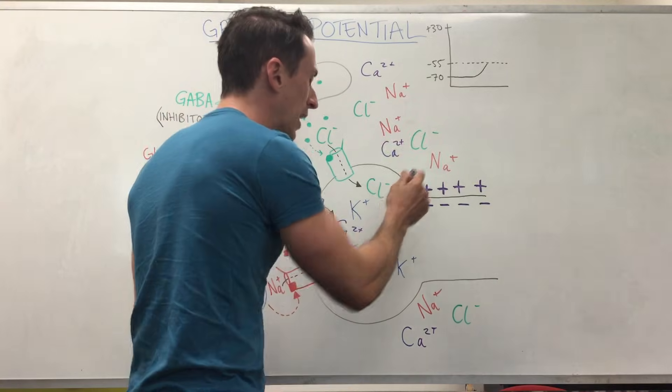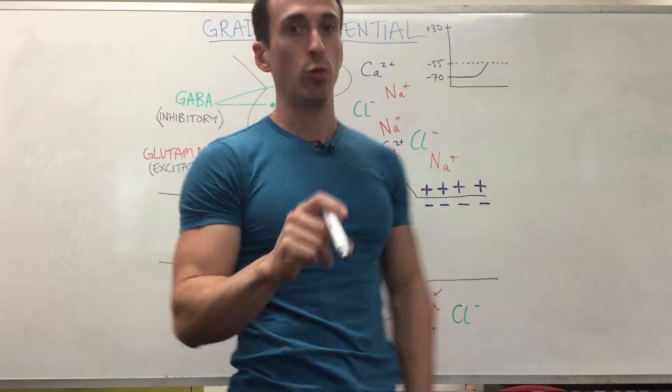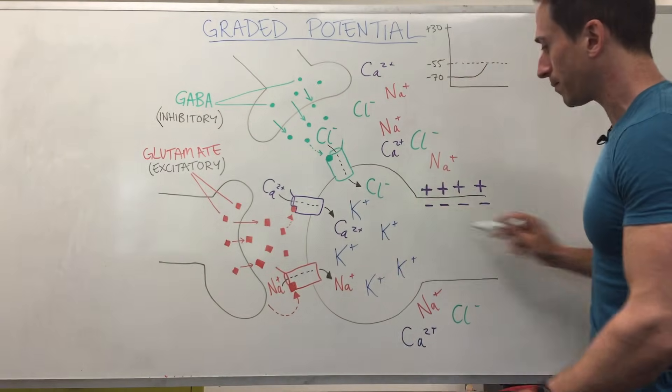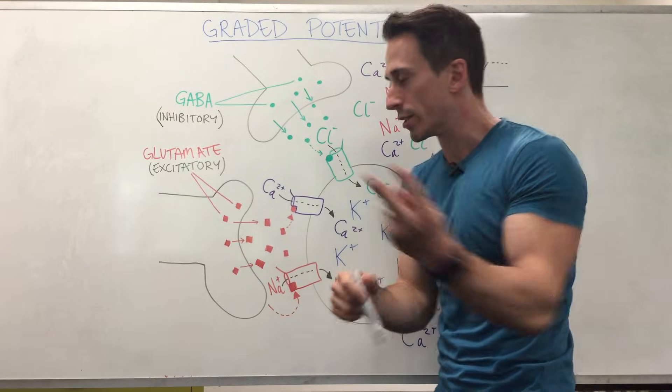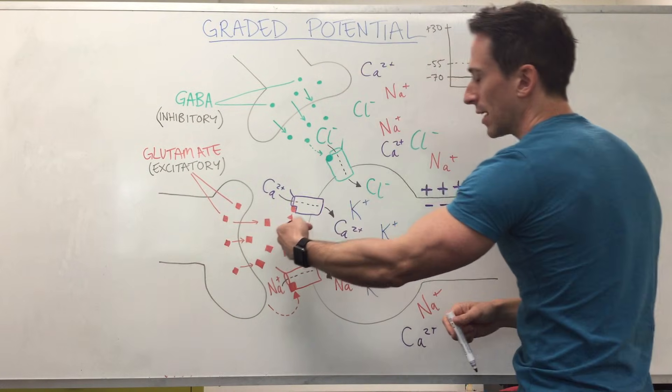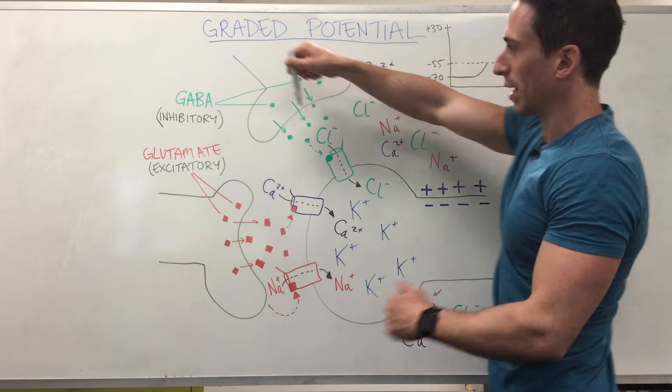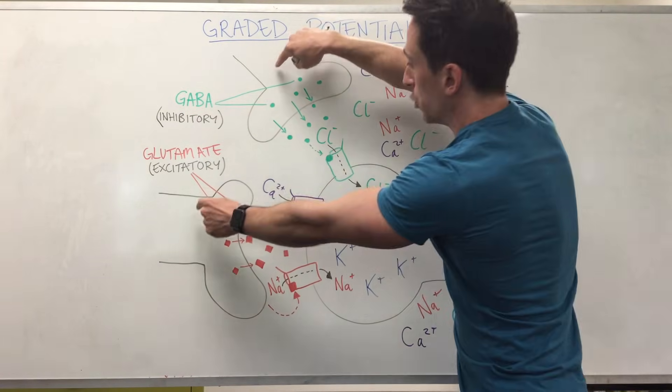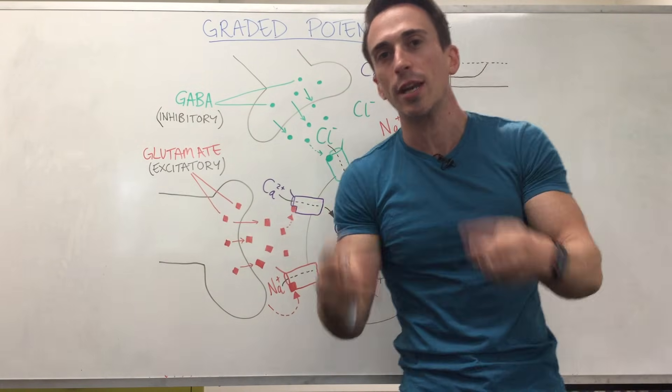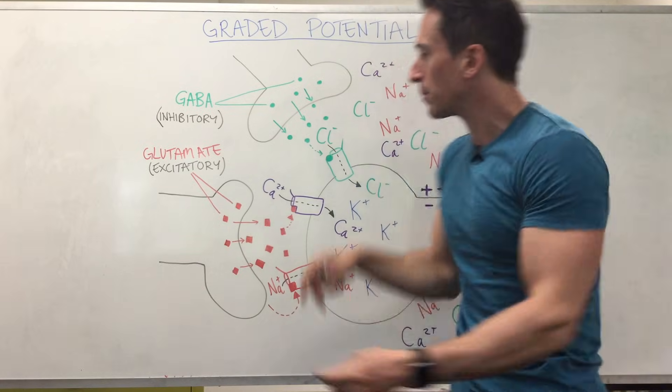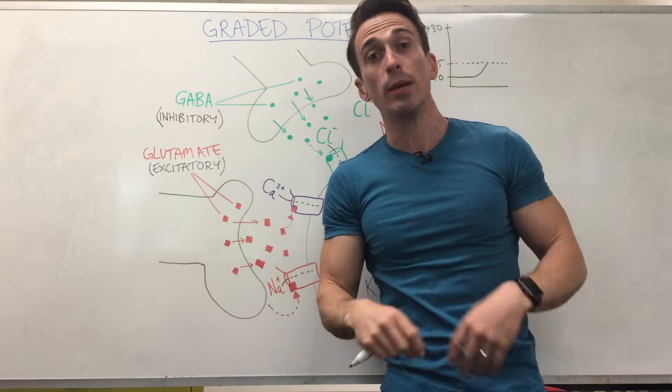But what stimulates these sodium channels to open up in the first place? This is that graded potential. So what I've got here is a neuron, and it's receiving a signal from two different neurons. It's got a neuron here that's sending a signal that's excitatory, and this neuron here is sending a signal that's inhibitory. Remember, neurons don't actually touch one another. There's a space in between that we call the synaptic cleft, and something needs to cross that synaptic cleft. That something is a neurotransmitter,